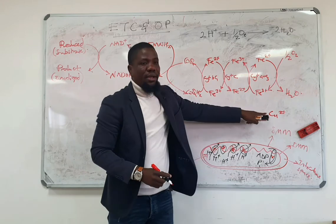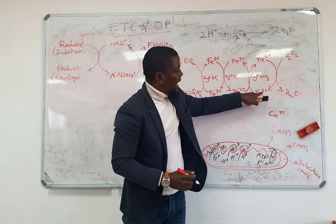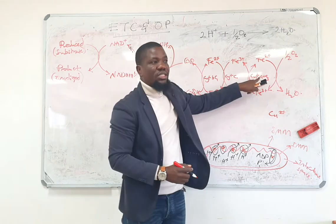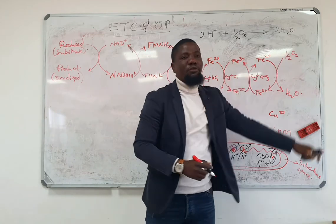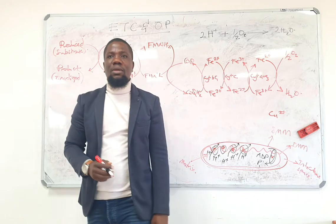And this copper which works as a prosthetic group allows this iron to actually be, this cytochrome oxidase to actually pass its oxygen, its electrons onto free oxygen and ultimately producing water.